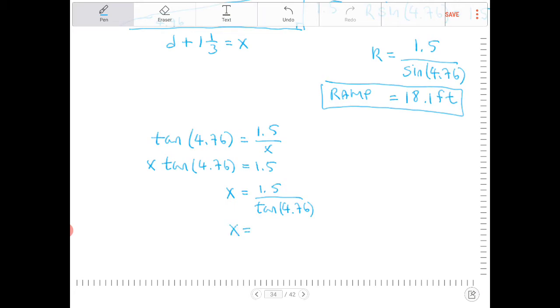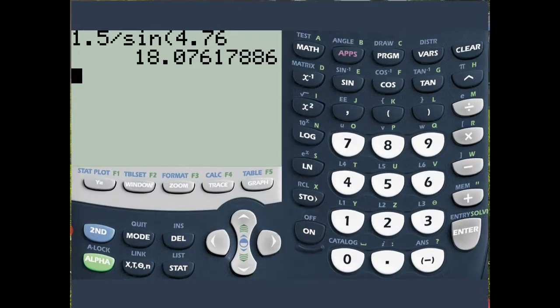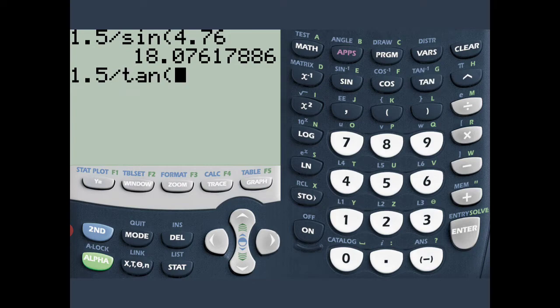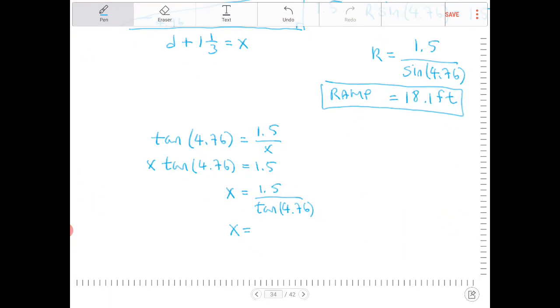So my value for x, let's take a look. 1.5 divided by tangent of 4.76 is 18.0138. I'm going to round at the end there, 18.0138.